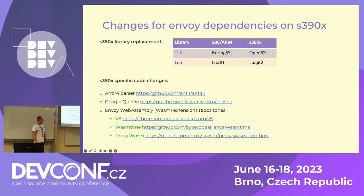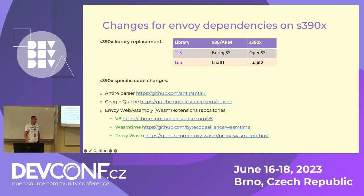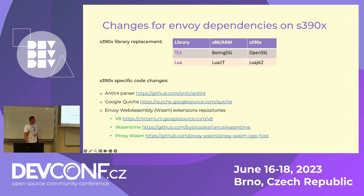Another change was to Google Quiche and its HTTP/2 implementation by fixing an endianness problem by swapping bytes. The last change was to WebAssembly extensions. WebAssembly, or WASM, is a portable binary format for executing code run in a memory-safe sandbox. Users can write filters, compile them, and dynamically load them as WASM modules without stopping or rebuilding Envoy. Currently on s390x we support two WASM runtimes: Google V8 JavaScript engine and Wasmtime, and to support them we had to change the proxy-wasm Envoy dependency.